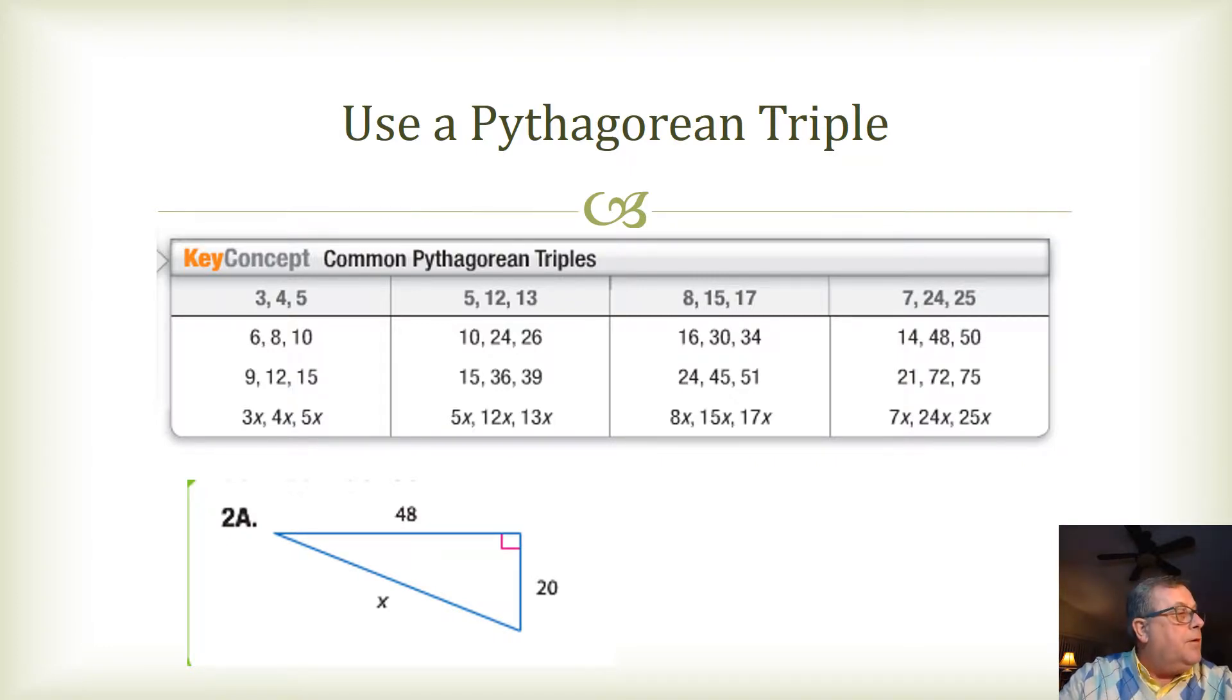We've looked at using Pythagorean theorem to find missing measures of the sides of a right triangle. And that leads us to something called Pythagorean triples. And these are a set of three real numbers such that A squared plus B squared equals C squared.